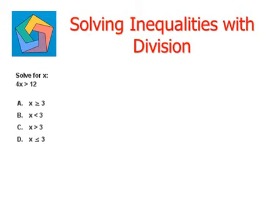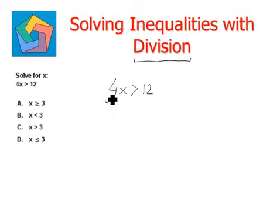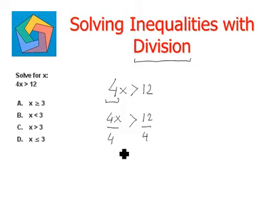Solve for x, and we are given the inequality 4x is greater than 12. We have to make this coefficient 1. In order to do that, we will be using the division operator. 4x is greater than 12 is our given inequality. To make this coefficient 1, we will divide by 4 on both sides: 4x divided by 4 is greater than 12 divided by 4. It is very important that we perform the same operation on both sides of the inequality sign in order to maintain the balance.